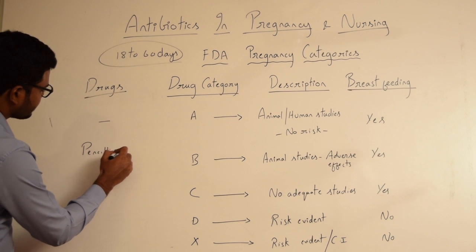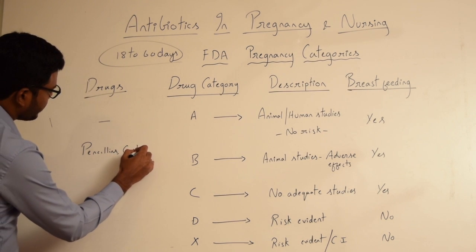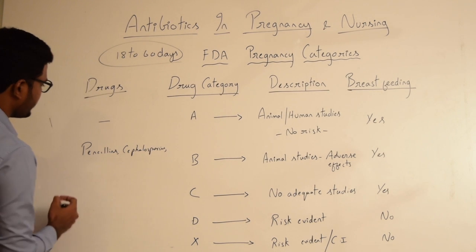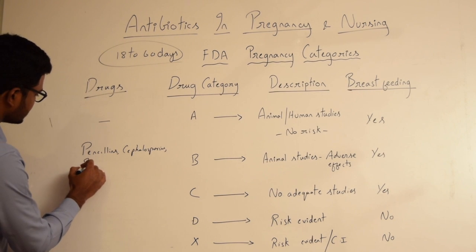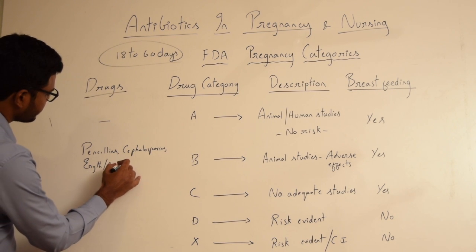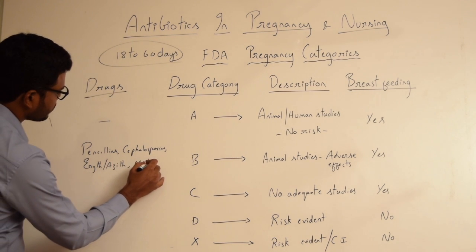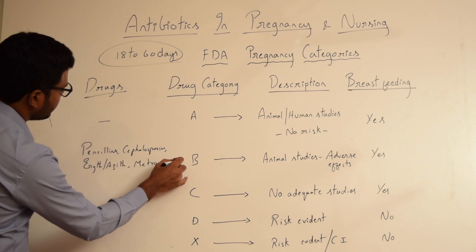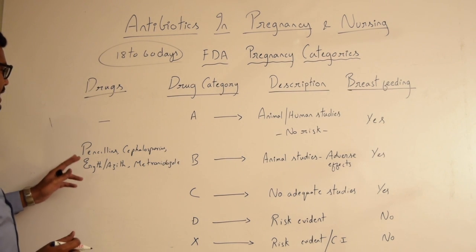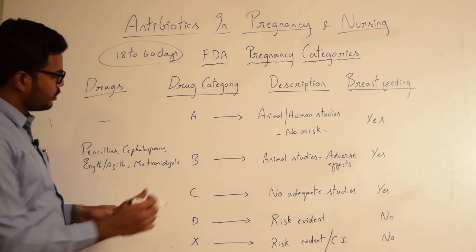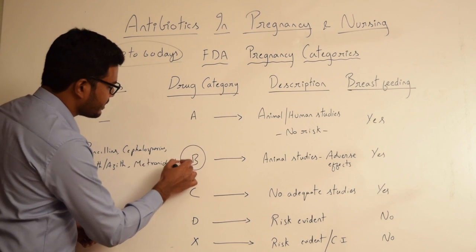Category B includes penicillins, cephalosporins, macrolides such as erythromycin, and metronidazole. So penicillins, cephalosporins, erythromycin, and metronidazole all fall under pregnancy category B.